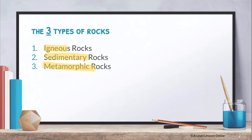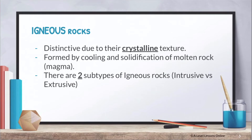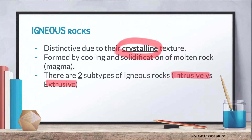For igneous rocks, your syllabus requires you to understand what they look like. Igneous rocks are defined as distinctive due to their crystalline texture. There are two subtypes: intrusive and extrusive rocks. Igneous rocks are basically the first stage of rock formation — they are formed by the cooling and solidification of magma. So when magma from a volcano solidifies, it forms an igneous rock.